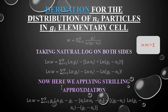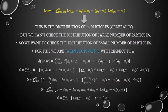Now applying Stirling's approximation: ln(gᵢ!) becomes gᵢ·ln(gᵢ) - gᵢ; for -ln(nᵢ!) we get -(nᵢ·ln(nᵢ) - nᵢ); and for -ln(gᵢ - nᵢ)! we get -(gᵢ - nᵢ)·ln(gᵢ - nᵢ) + (gᵢ - nᵢ). Opening these brackets, many terms cancel, leaving: ln(W) = Σ [gᵢ·ln(gᵢ) - nᵢ·ln(nᵢ) - (gᵢ - nᵢ)·ln(gᵢ - nᵢ)].